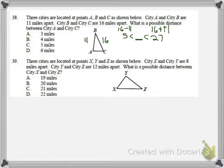And the only one that works would be 6. Because if I chose 6, the longest side would be 16, is less than 6 plus 11. That would check out. So 6 works.